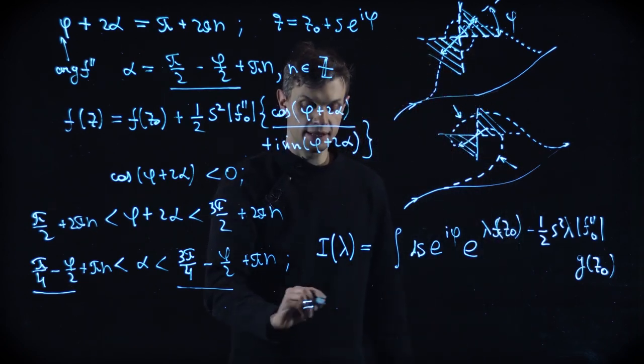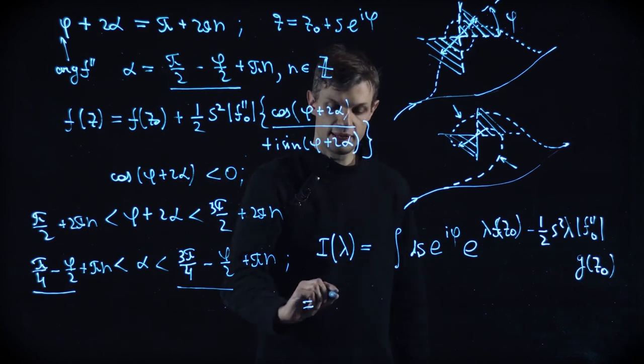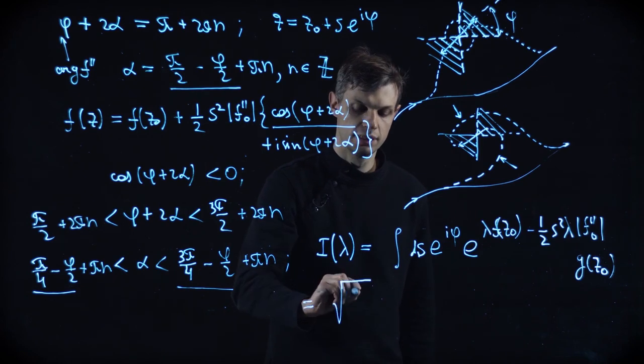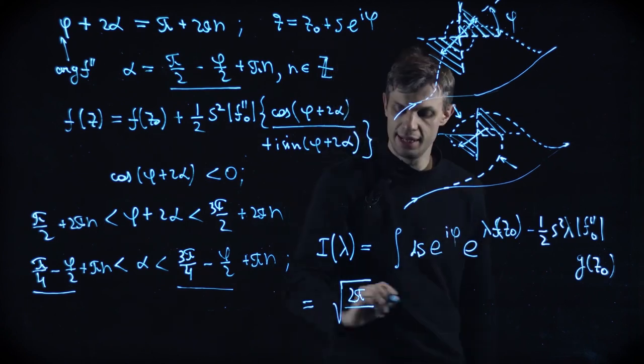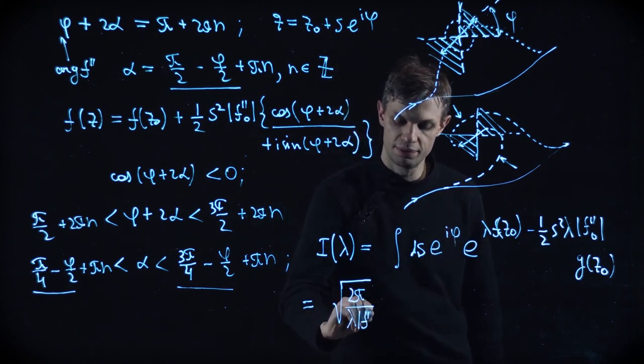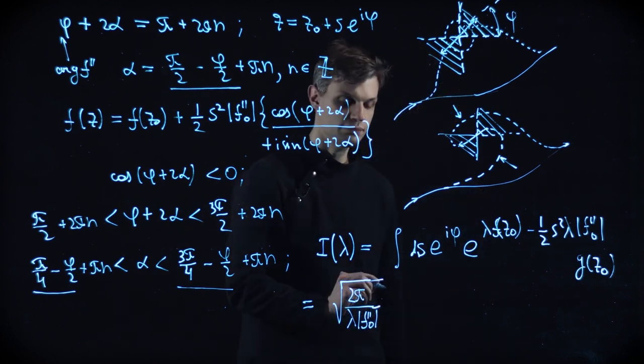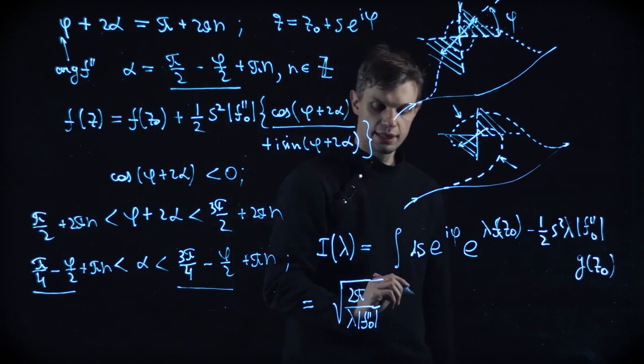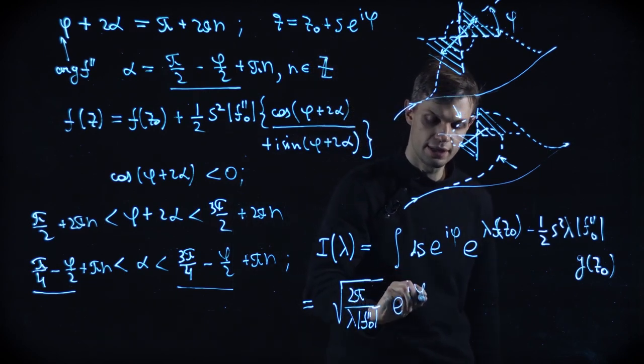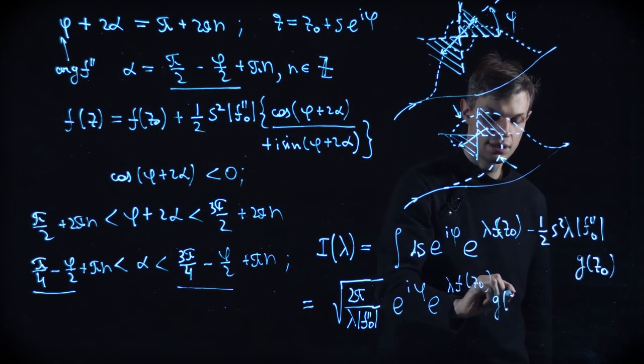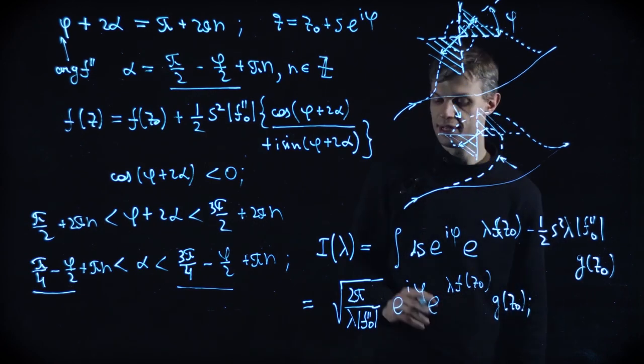And this is the final answer for our asymptotic estimate. So the Gaussian integral is square root of 2 pi by lambda f prime prime 0. And e to i alpha e to lambda f of z0 g of z0. So here it is.